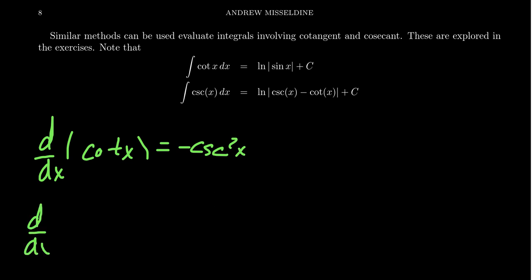The derivative of cosecant as well, you're going to get a negative cosecant x, cotangent x. So there's a negative sign that pops up in the u-substitution, so pay attention to that. The other parts that you're going to need to know that are slightly different is we need to know the antiderivative of cotangent and the antiderivative of cosecant.